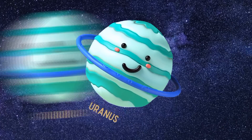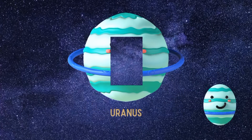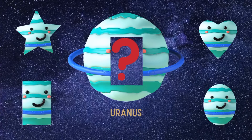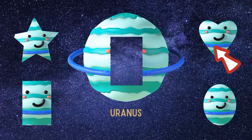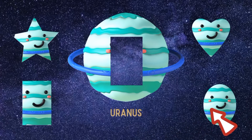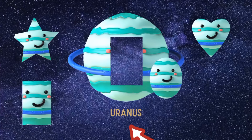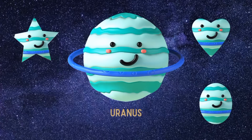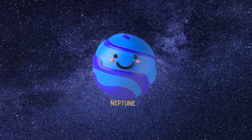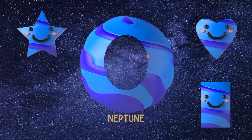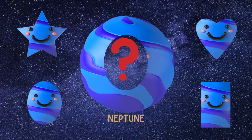Uranus. Oval. Star. Heart. Neptune. Rectangle. Neptune. What is here? Star. Heart. Heart. Oval. Rectangle. Neptune. Neptune. Neptune. Neptune. Rectangle. Star. Heart.